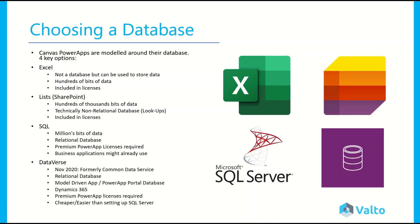The next option is Microsoft Lists. Anyone who's used SharePoint before in Office 365 will have seen SharePoint Lists, and this is perfect for storing hundreds of thousands of rows of data. Technically it's a non-relational database — not really a database at all — but you can have lookups. For example, if you had a list of contacts and a list of companies, the contacts list could have a column that looks up the companies list and pulls in a specific company. This is again included in most Office 365 licenses your organization will probably already have, so there are no additional costs. It's also quite scalable, and this is why we typically see most small and medium-sized businesses using these lists as a database for their Canvas PowerApps.